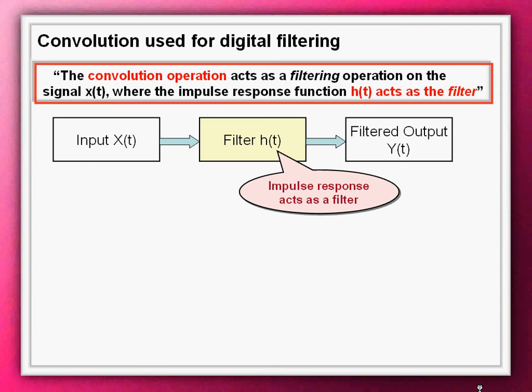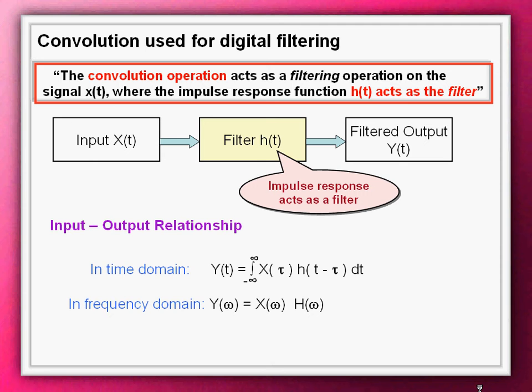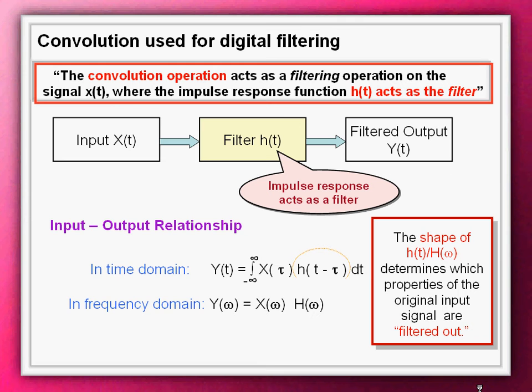This property of convolution can be used in filtering. The convolution operation may also be thought as a filtering operation on the signal xt where the impulse response ht is acting as a filter. The input-output relation for the system is shown both in time and frequency domain. In time domain, the input-output relation is simply convolution operation, whereas in frequency domain, it is the product of the Fourier transforms of the two signals. The shape of the impulse response determines which properties of the original signal xt are filtered out.